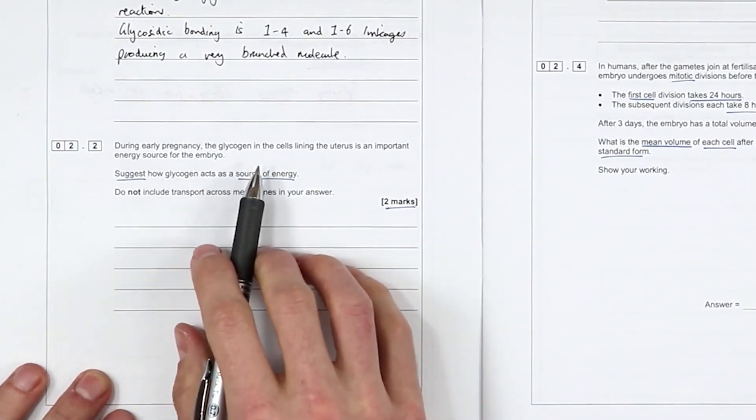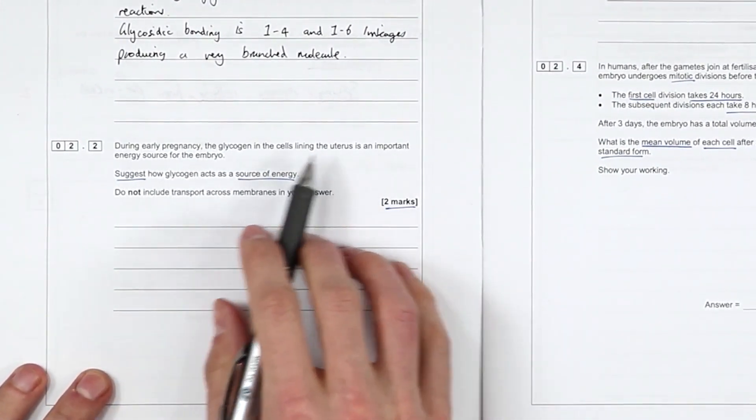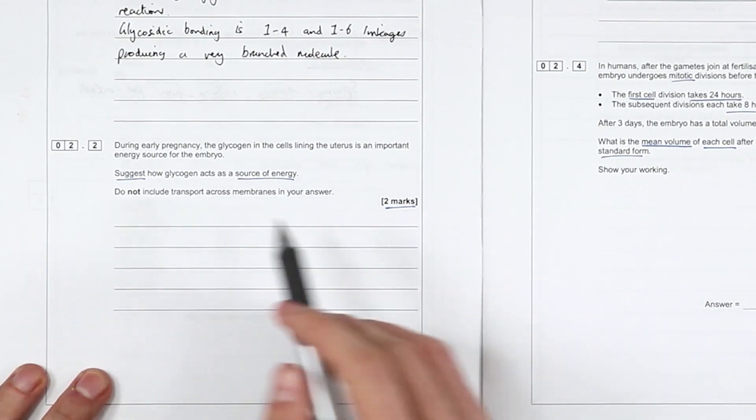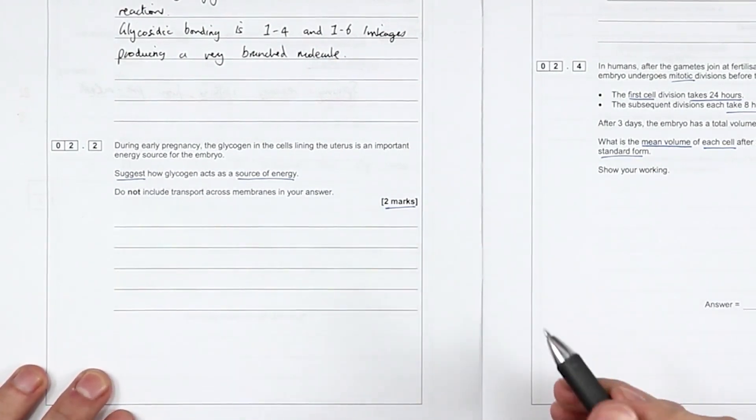Okay, during early pregnancy, the glycogen in the cells of the lining of the uterus are important source of energy for the embryo. Suggest how glycogen acts as a source of energy. Do not include transport across membranes.